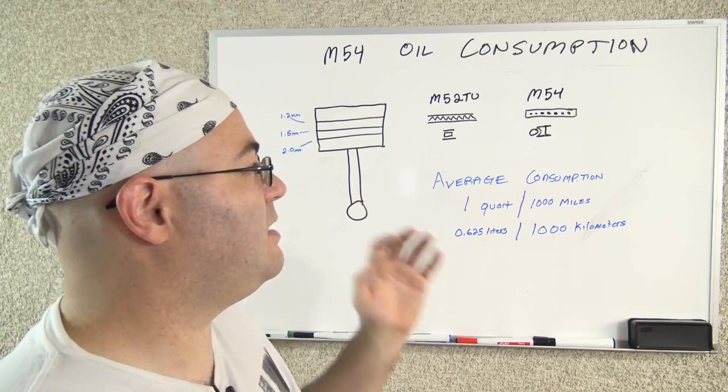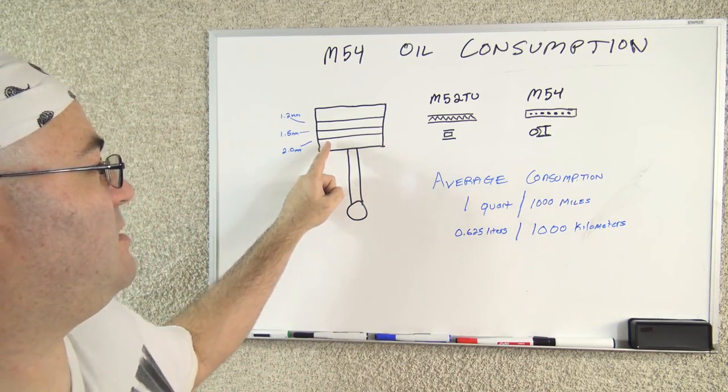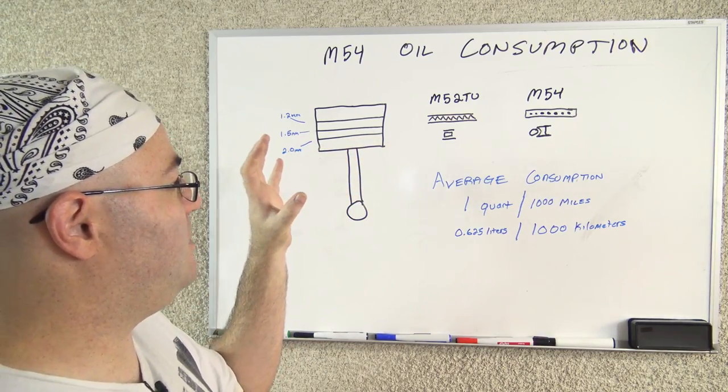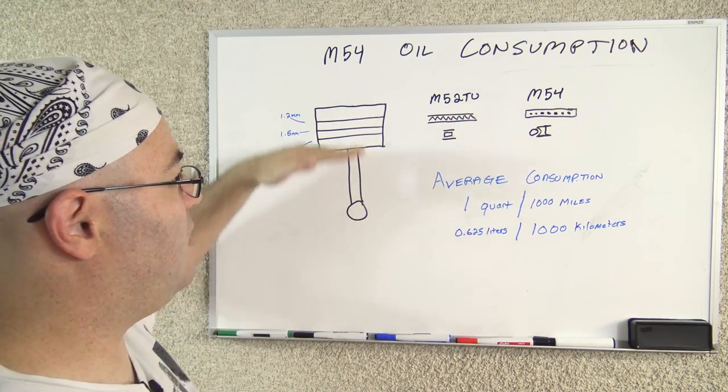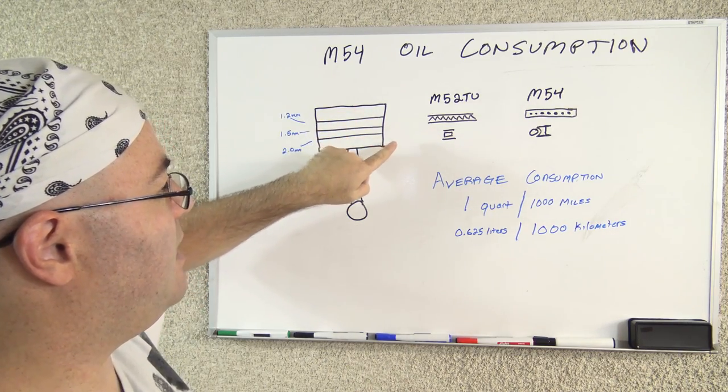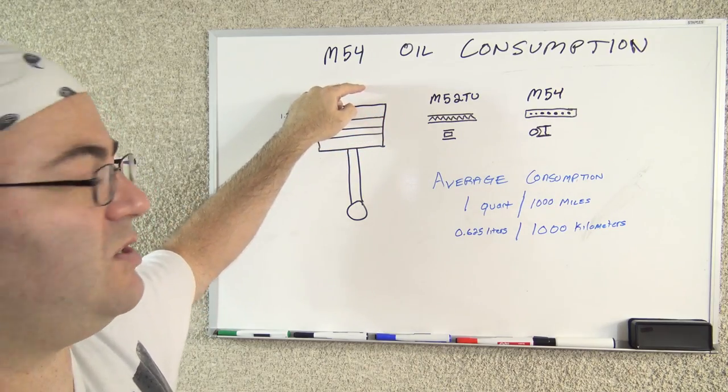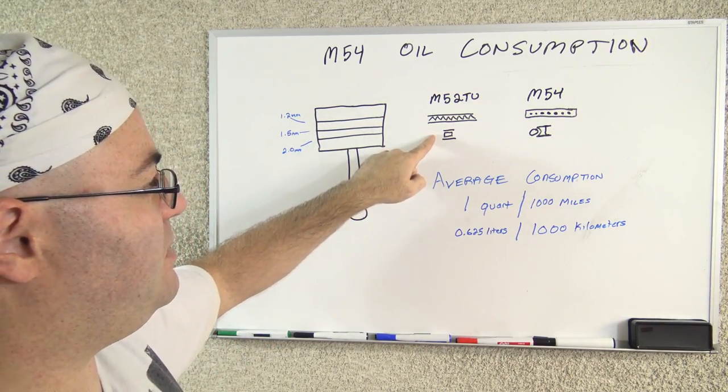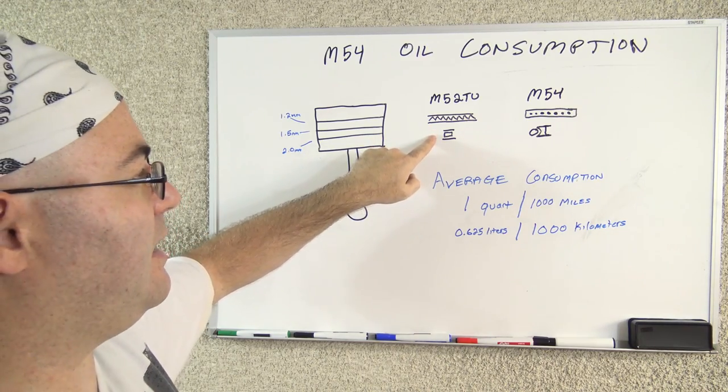And what happened is BMW changed the design of the oil control ring on the piston, which is this lower ring right here. The job of that ring is to scrape the oil off the walls of the piston so that it doesn't get by and actually get burned up in the top of the combustion chamber. And as I said, the M52 TU had the old style oil control rings, which were a three-piece design.